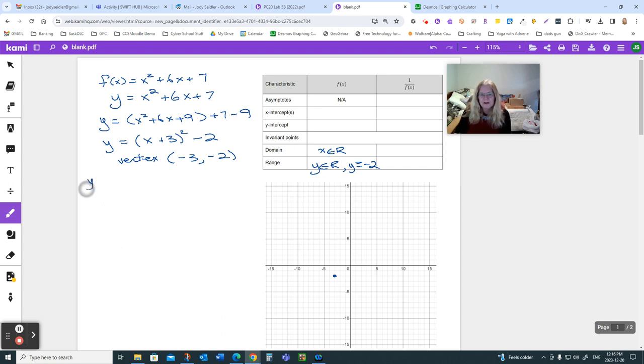The easiest thing in the world to find is a y-intercept. Because you do it by setting x equal to 0, which takes away all of the messy part of this question. So instead of a quadratic, you have that, which is just 7. So my y-intercept is at 0, 7.